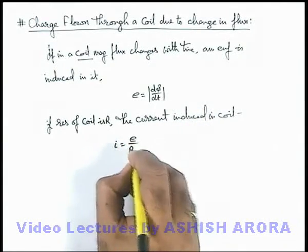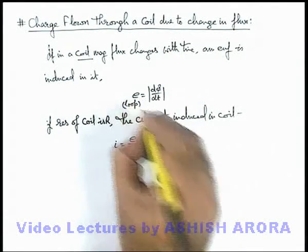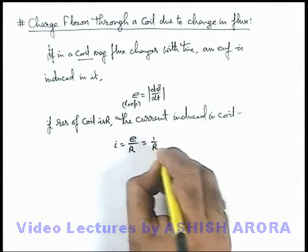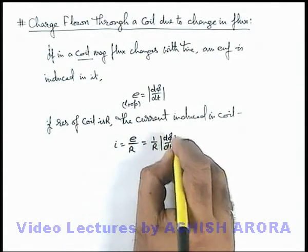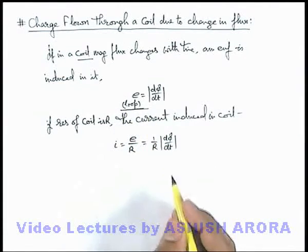simply E/R, because in the coil this EMF we call as loop EMF. So this will be E/R, and we can write it as 1/R magnitude of dφ/dt. That is the current flowing in the coil because of EMF induced in the loop.